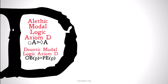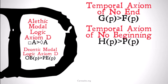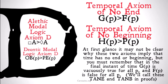You may remember the alethic modal logic axiom D, which said that it's necessary that A implies that it's possible that A. We also saw it in deontic modal logic as axiom D: it's obligatory that P implies it's permissible that P. The temporal axiom of no end and the temporal axiom of no beginning are going to take exactly the same structure. They're going to say: it's always going to be the case that P implies that it will at some point in the future be the case that P; and it has always been the case that P implies that at some point in the past it was the case that P.